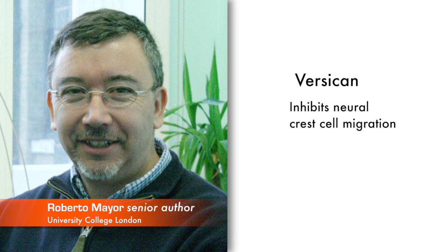Roberto Mayor from University College London says that in order to test whether confinement plays a role in neural crest migration, his team needed to identify an extracellular matrix protein that could potentially restrict neural crest cell movement. We found this Versican molecule that had a very long history in the neural crest field. Some people proposed that Versican was an inhibitor of neural crest migration and other people published that Versican was required for neural crest migration. And for us that was the ideal candidate because a molecule involved in confinement should be an inhibitor of neural crest migration, but at the same time it will allow directional migration.